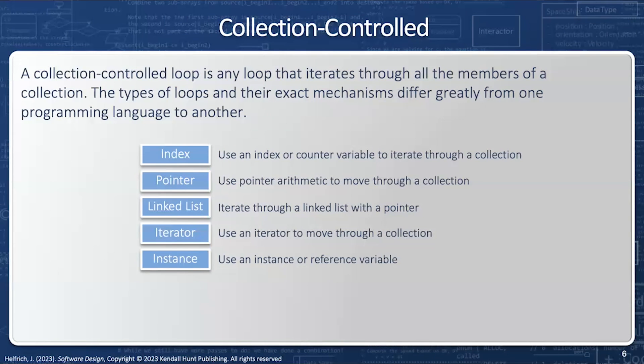And the last and newest member of the loop family is an instance loop, otherwise known as a for each loop. Here I don't have an index or a pointer or an iterator, but rather I have an instance of the value itself, which is going to move through the collection.